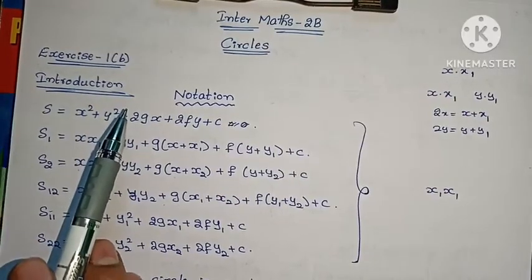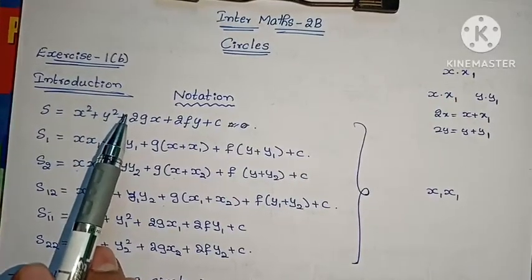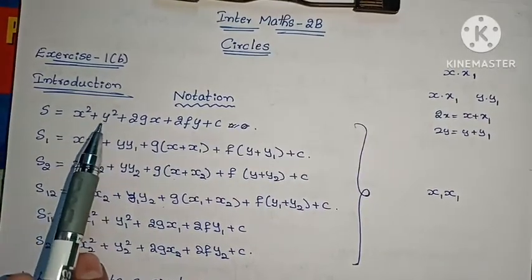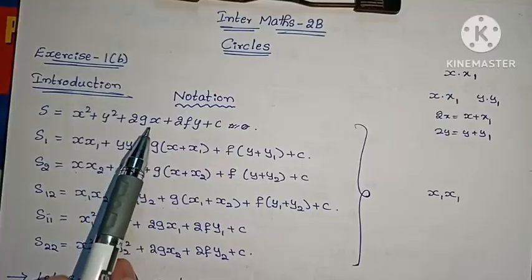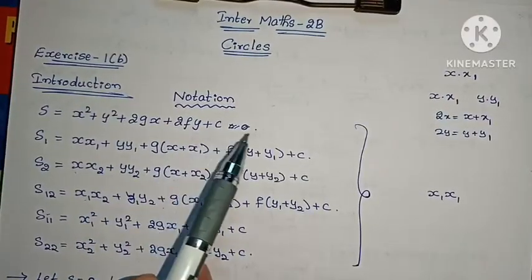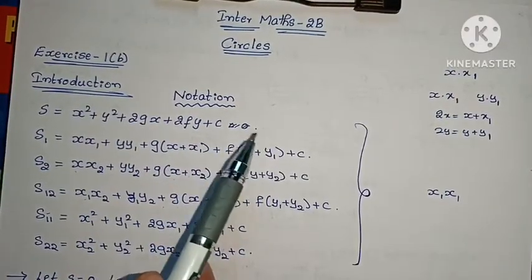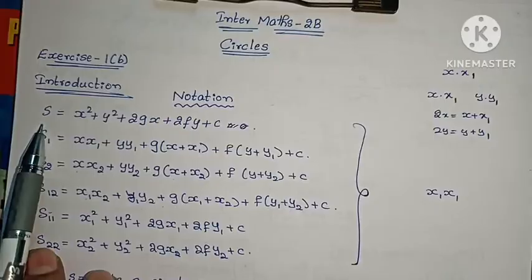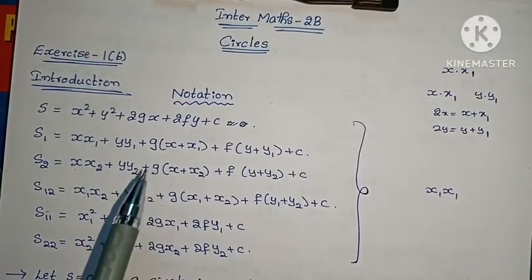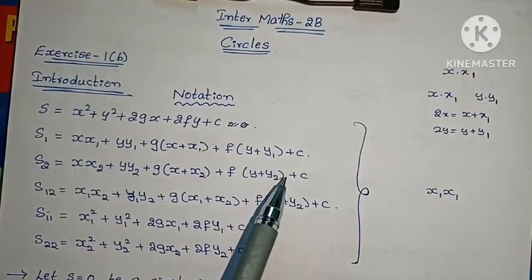In this circle topic, you will have a general form: x squared plus y squared plus 2gx plus 2fy plus c equals 0. In this video, we will use the notation to solve problems.